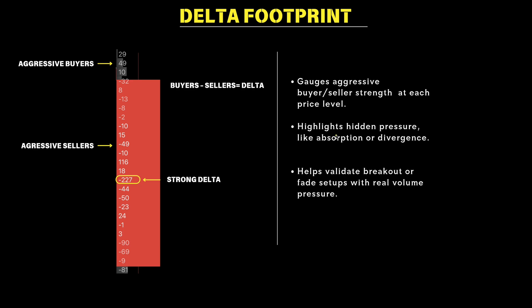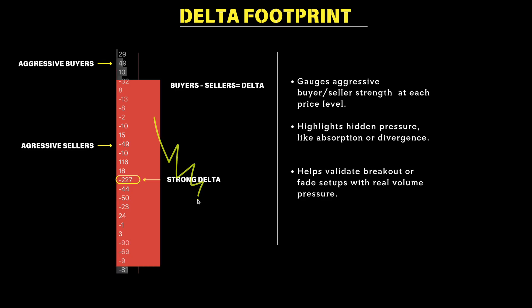Absorption is going to occur whenever there are aggressive sell orders in the market but all of the passive buy orders are absorbing those aggressive sell orders — and whenever we get that, the market will typically stall or reverse. It goes back to the golden question: what is the market trying to do and how good of a job is the market doing it? If we get a lot of aggressive sell orders stepping into the market but price starts to go up, that is an indication that we potentially have absorption going on. How is it possible to have more aggressive sell orders than aggressive buy orders but price is going up? The only conclusion is that passive orders are absorbing all of the aggressive volume to the downside, and that's how the market would start to rise.